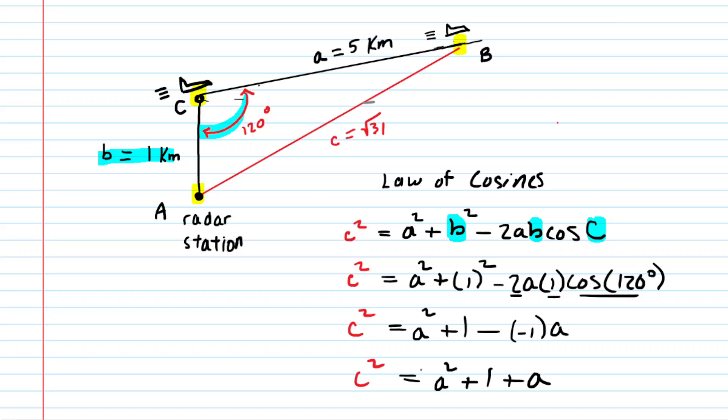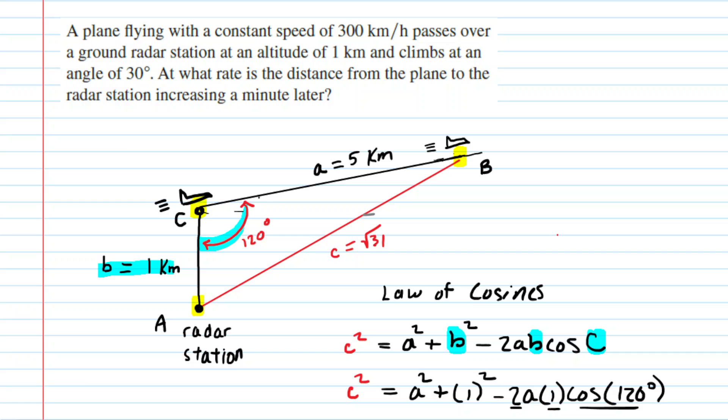Now, the other quantities in our equation, so c and a, they're changing. And so we need their rates of change. One of those rates of change is known. If we go back to the diagram, we again know that this side marked a is increasing. It's getting longer as the airplane flies outward, and it is increasing at a rate of 300 kilometers per hour.